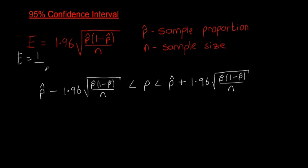But now we've made it just a little bit more complicated. So in this case, E is equal to 1.96 times the square root of p hat times 1 minus p hat, where p hat is the sample proportion, all divided by the sample size.